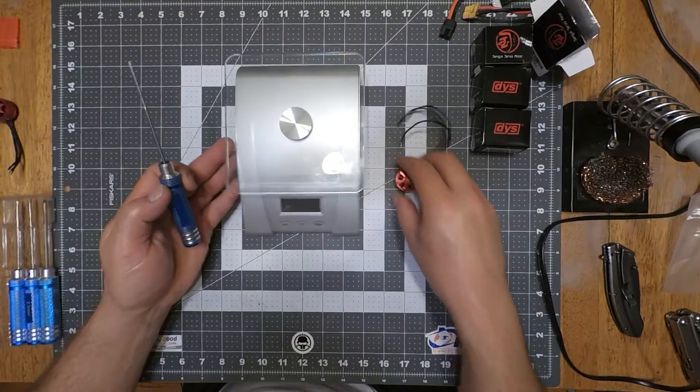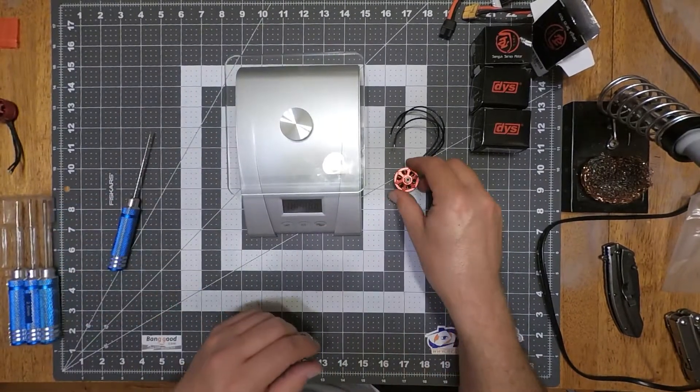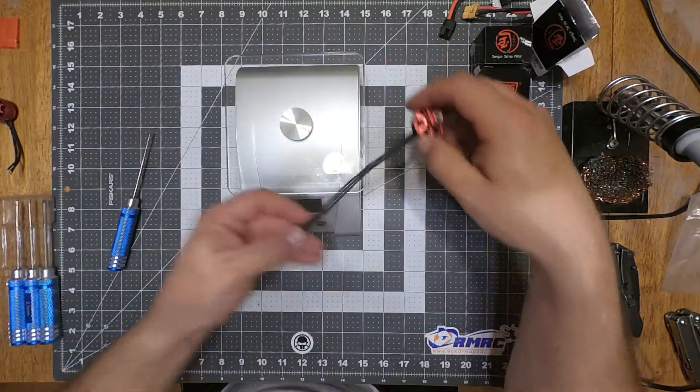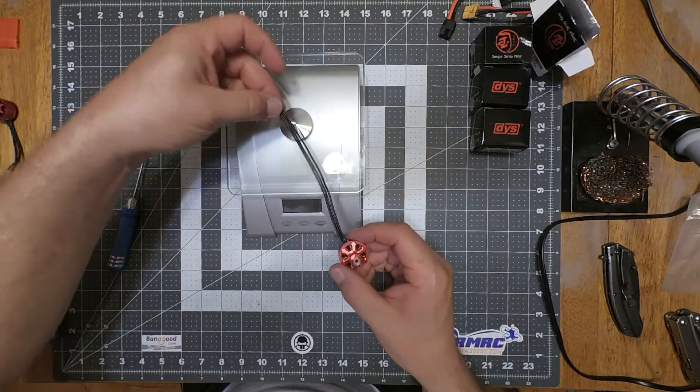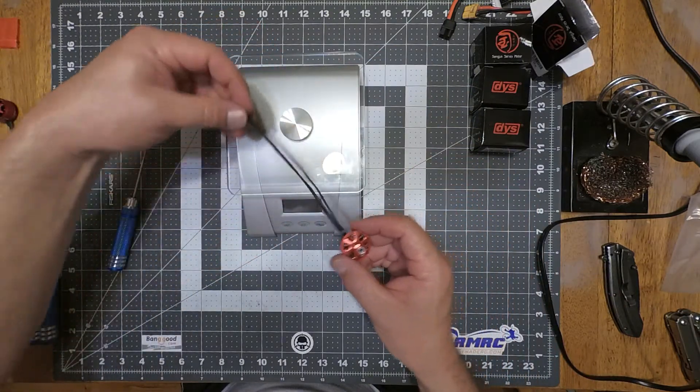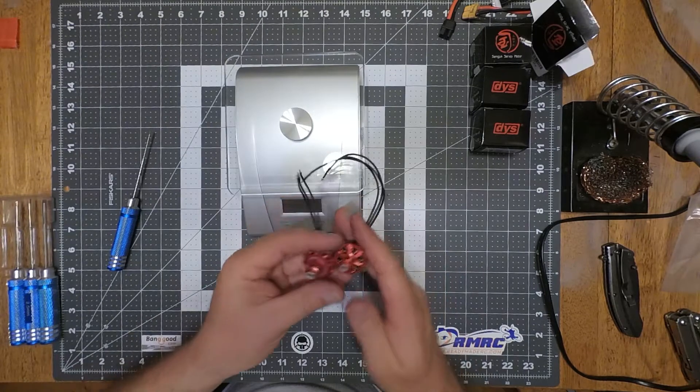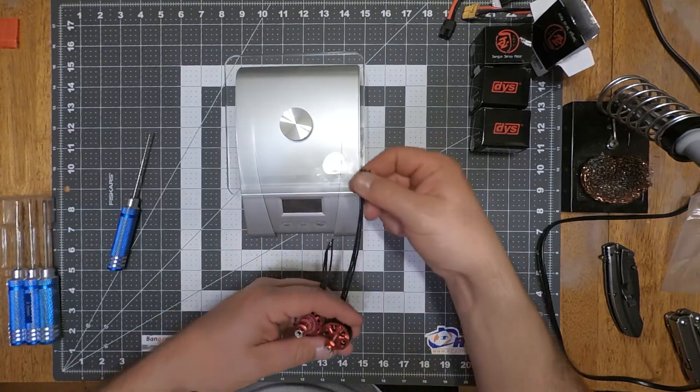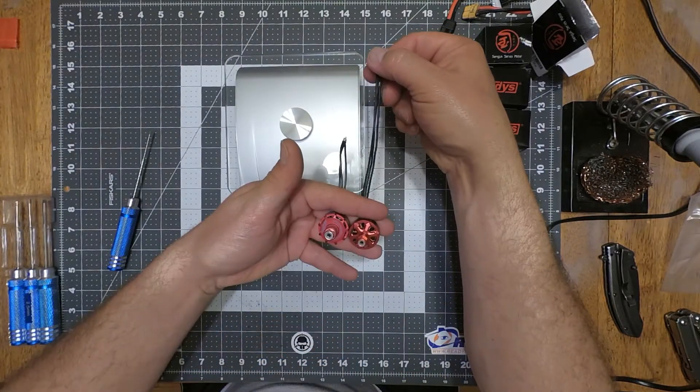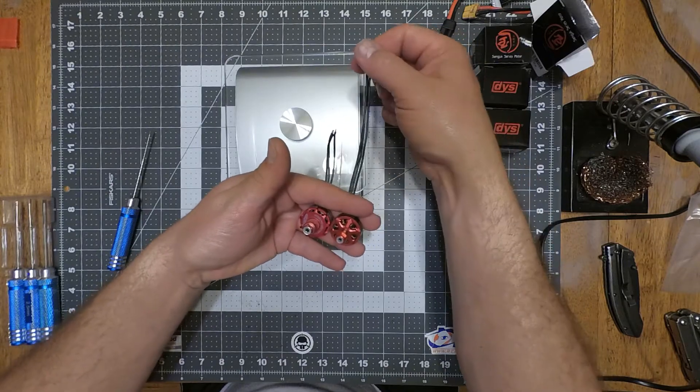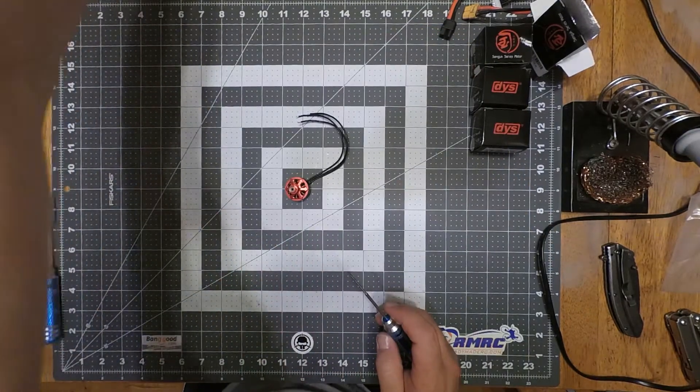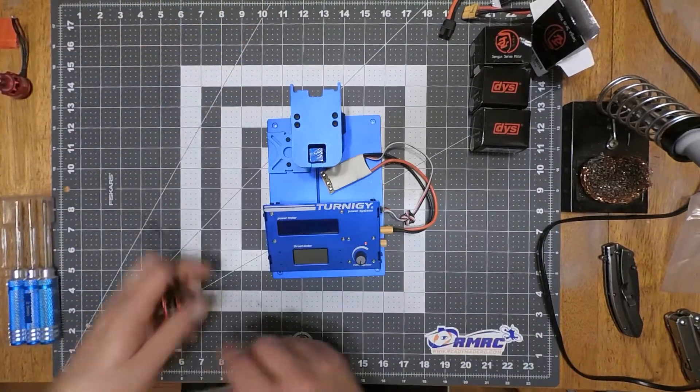So the weight with the prop nut. 34 grams. It's got nice long leads. So if you're running a 4-in-1, you won't have to extend the leads. I like that. These, if you're running a 4-in-1, obviously you're going to have to extend the lead with the racer stars. I don't like having to do that.